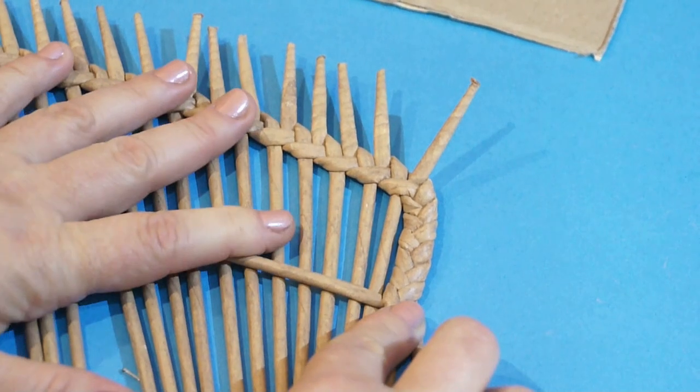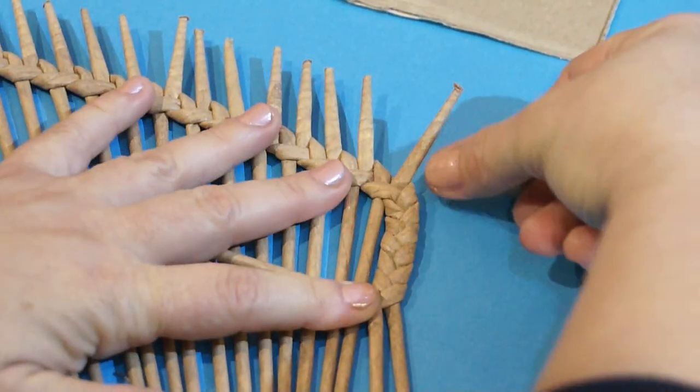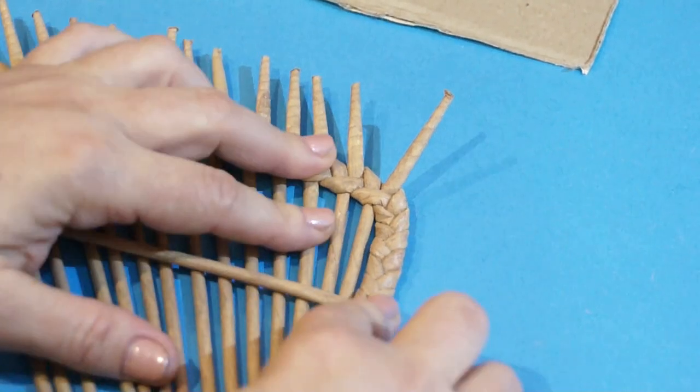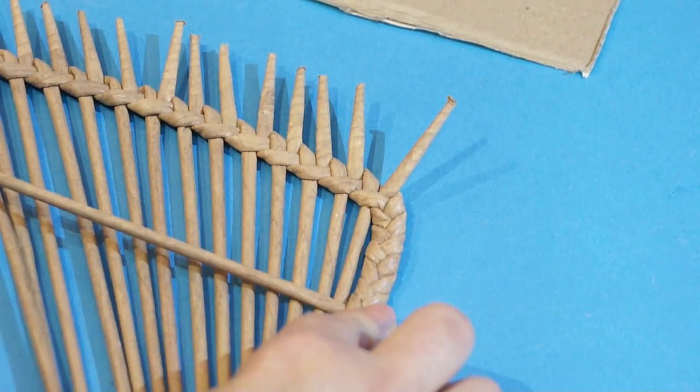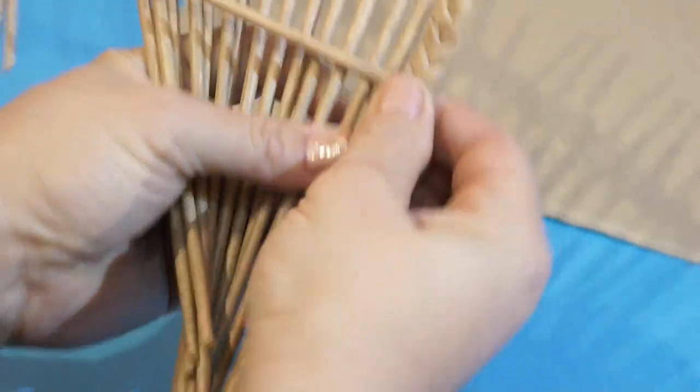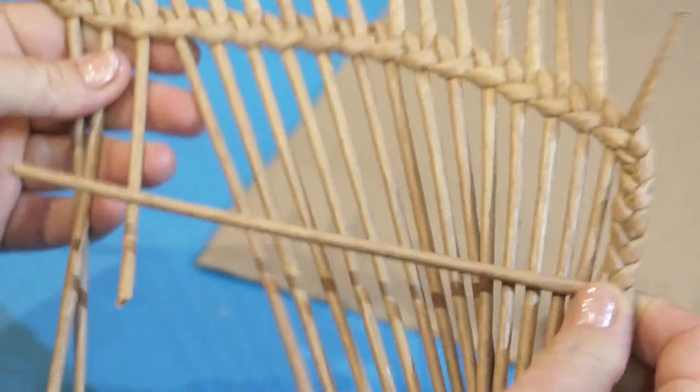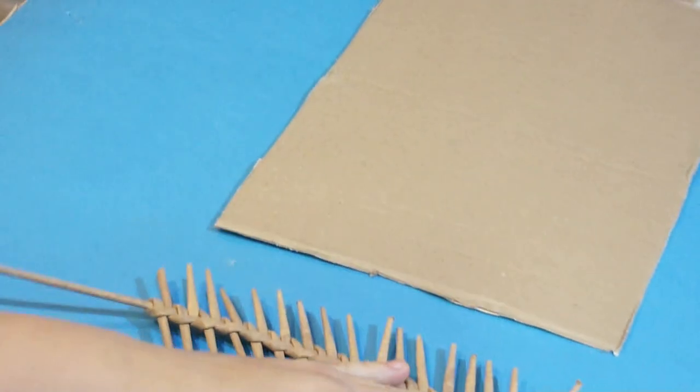Make as many braid stitches as you need for sufficient row height. I'd like my rows to be this high, so let's count. One, two, three, four, five, six. So I need six stitches. Now I'm going to repeat all the same actions but in the reversed direction.